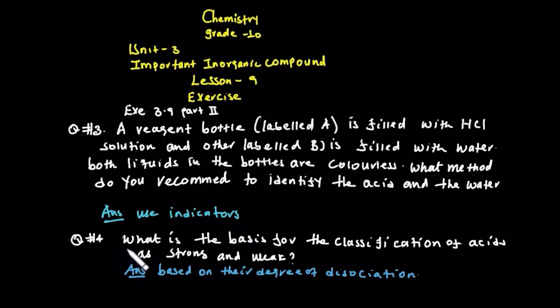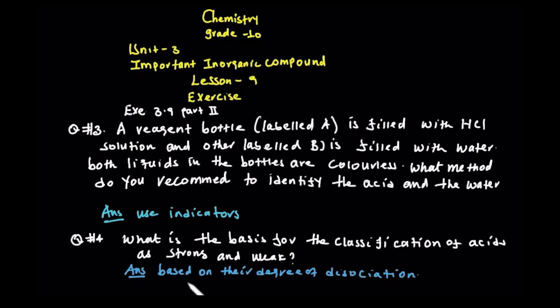Question number four. What is the basis for the classification of acid? Strong and weak. Acid — strong acid, weak acid — is the same. Based on water, the same degree of water. Dissociation.